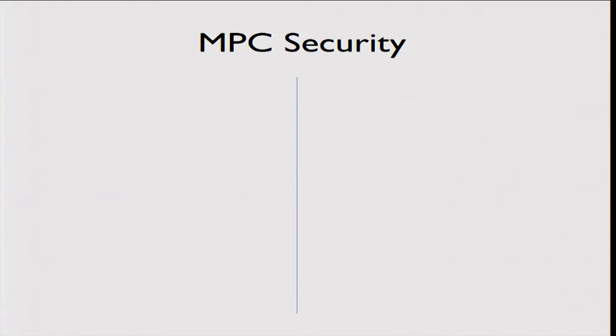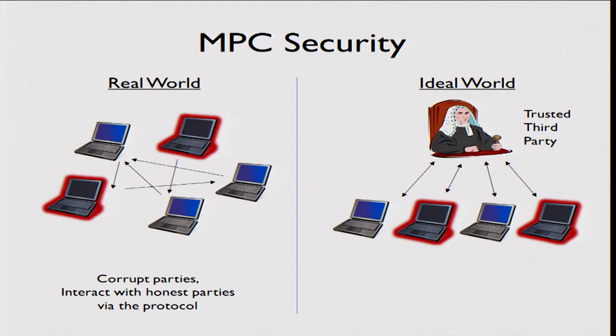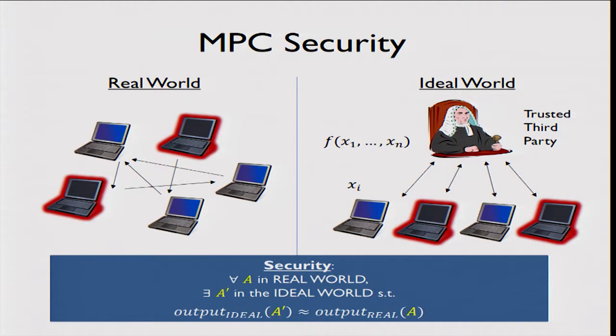To define security for an MPC protocol, we use the real/ideal world paradigm. In the real world, parties talk to each other, some are corrupted, and they see the entire view of the protocol. In the ideal world, there is a trusted third party: everybody gives their inputs to this party, he computes F and sends back just F on the inputs. A protocol is secure if for every adversary in the real world there exists an adversary in the ideal world who can simulate the entire output — capturing that whatever is seen in the real protocol is essentially worthless beyond the function output.